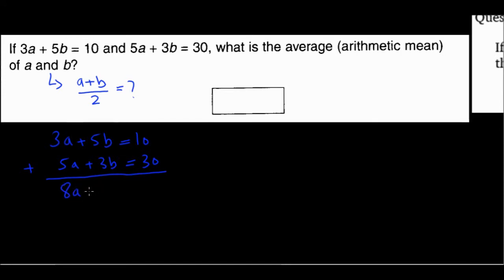I'm adding two equations, I get 3a and 5a will give me 8a, 5b and 3b will also give me 8b. That's nice. And you'll see why this is good for us. 10 and 30 will give me 40.